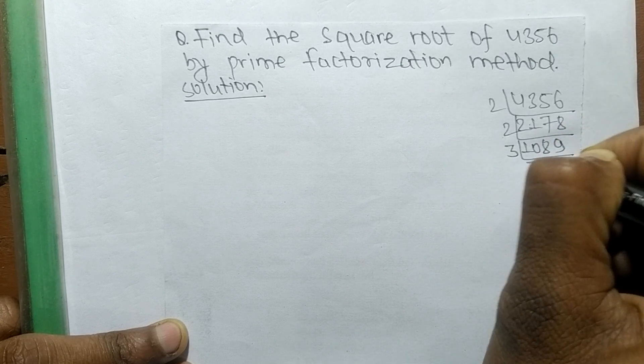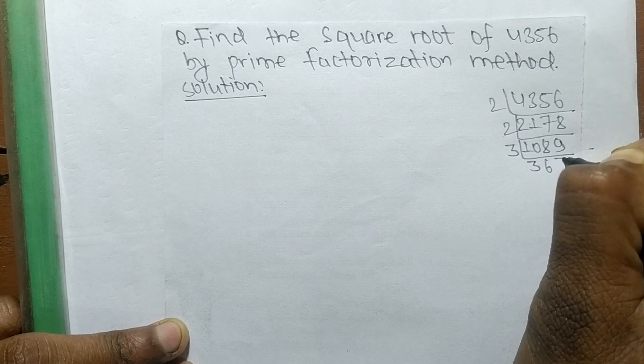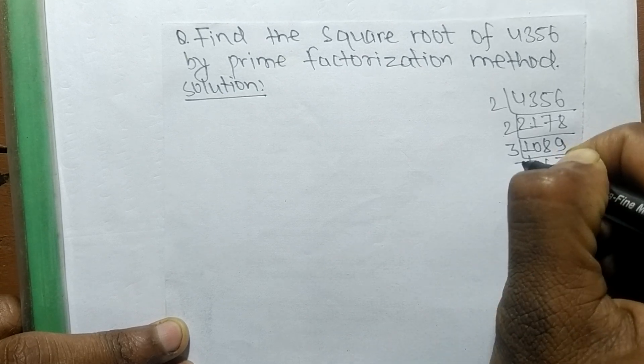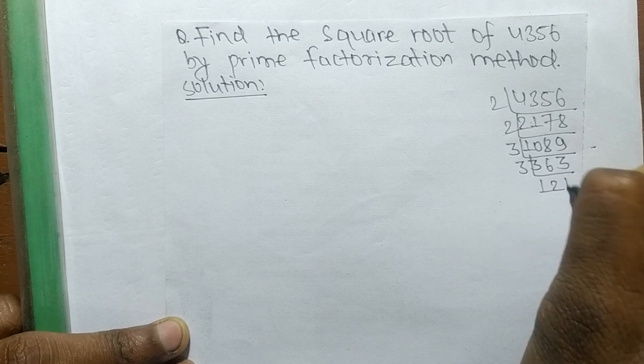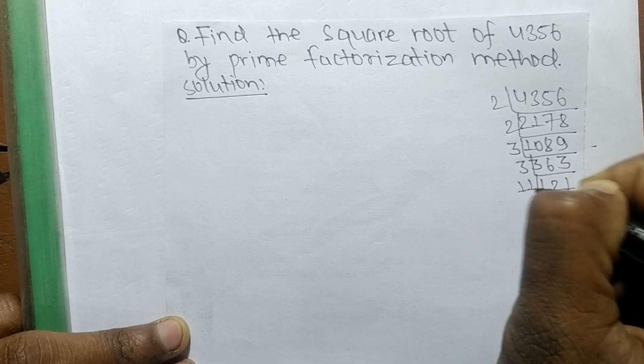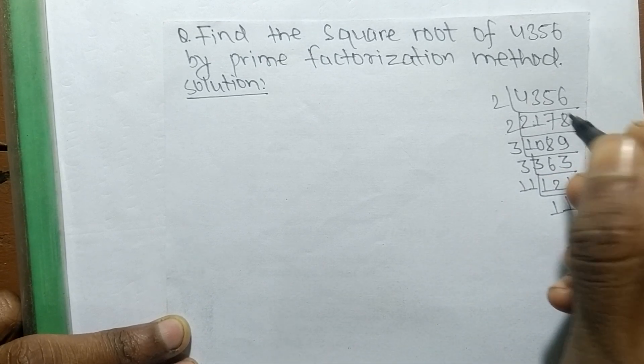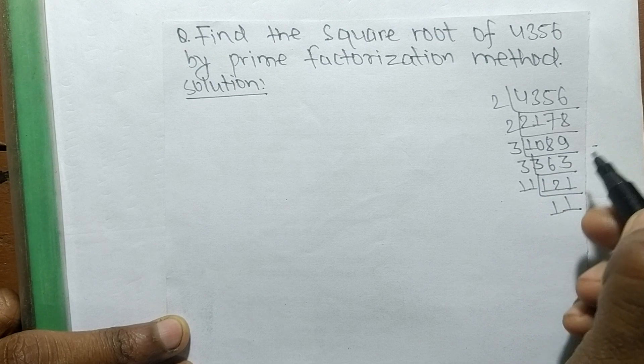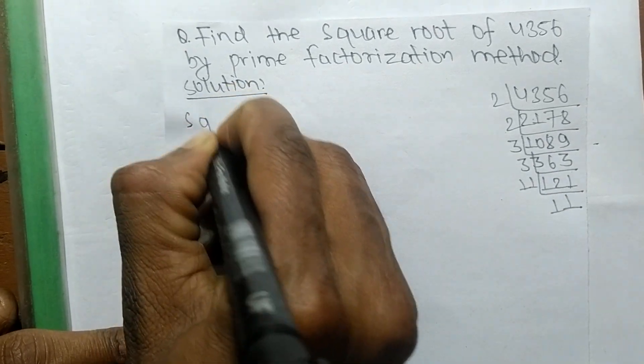Again, it is 3 times 3 is 9, 3 times 6, and 3 times 3. So again it is 3 times 121, so it is 11 times 11. After finding the prime factors, now we find the square root.